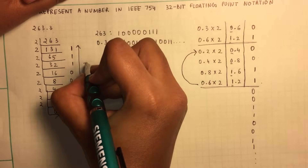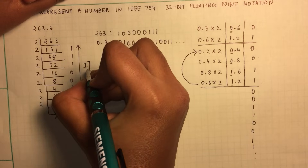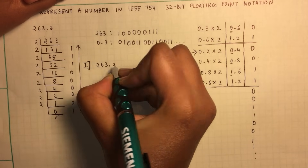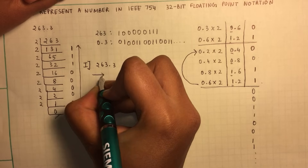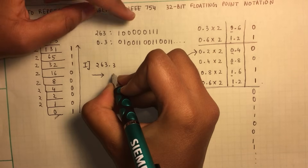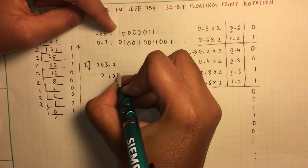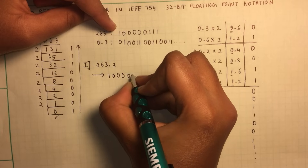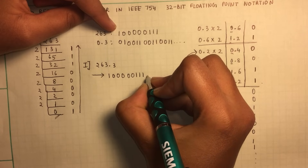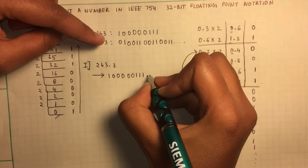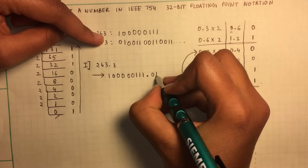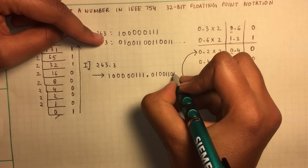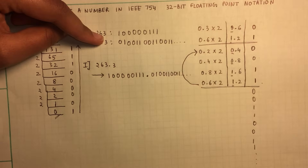So the first step was to represent 263.3 in binary form, which is 100000111.01001100110011 and so forth.